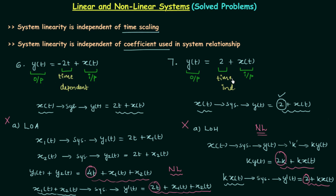Comparing both cases: if you have an added or subtracted term which is time dependent, the system is non-linear. And if you have an added or subtracted term which is time independent, the system is also non-linear. So whenever you have any added or subtracted term, the system is going to be non-linear. This is our third conclusion.